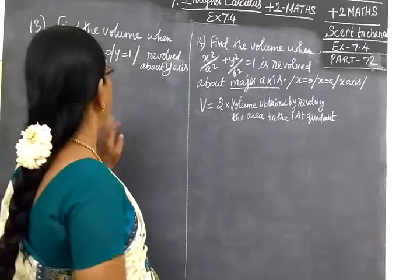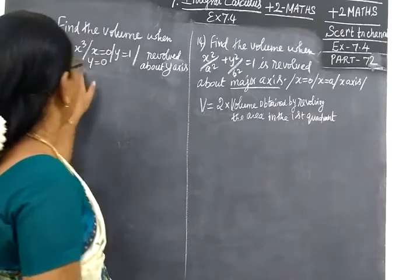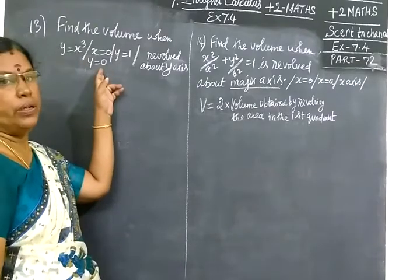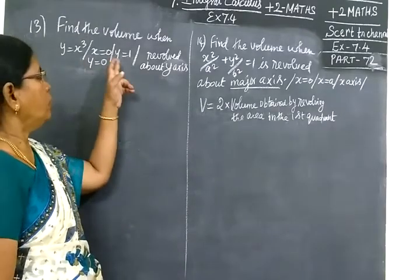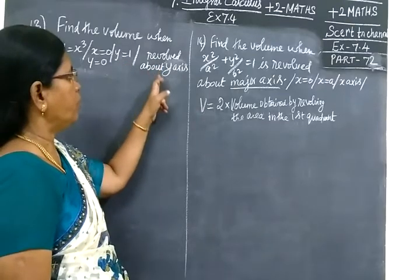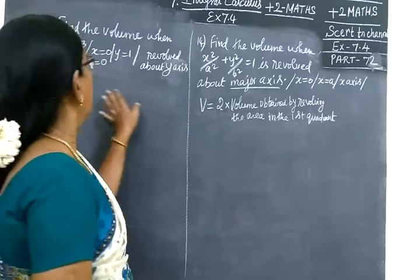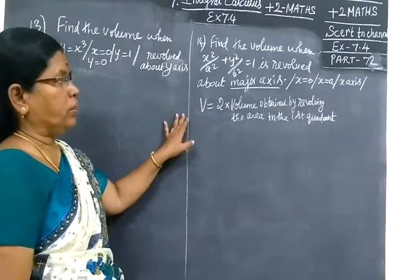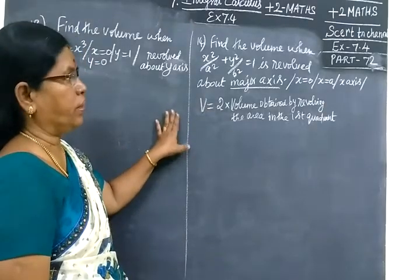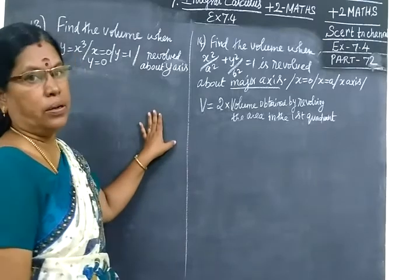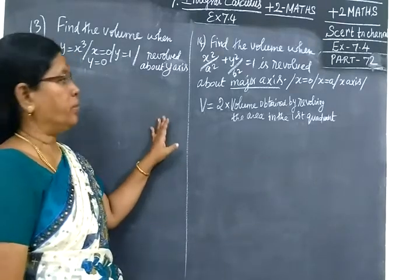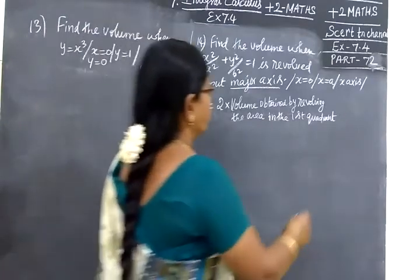Now we see problem 72. Find the volume when y = x³, x = 0, y = 0, y = 1 is revolved about the y-axis. This is the second question. These two questions are the last in this exercise. The next exercise is starting with circumference, finding surface area and circumference.